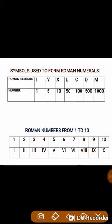Since a symbol can be repeated a maximum of 3 times, 4 is represented by IV. 5 is represented by V. 6 is represented by VI, 7 is represented by VII, and 8 is represented by VIII. Since I has already been repeated 3 times, 9 is represented by IX and 10 is represented by X.